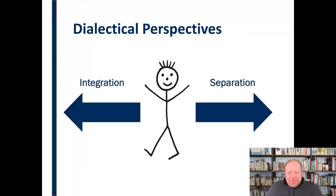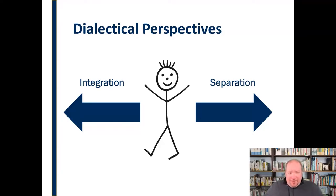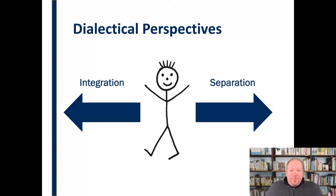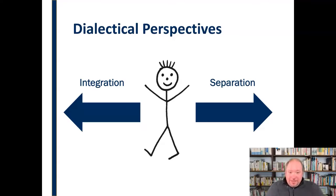What this means is that relationally speaking, every one of us goes through different phases where there are times we want to be with people — we want to be included, close to people, we have that desire to be around people. That's integration. And there are other times when we're going to feel separation — maybe I need some alone time, some time to just cool off by myself. As an introvert, this is something I can relate to very strongly.